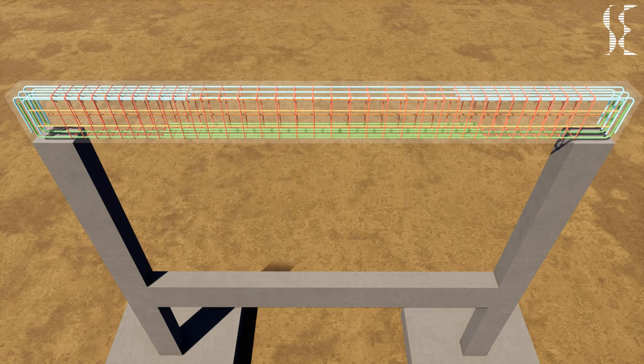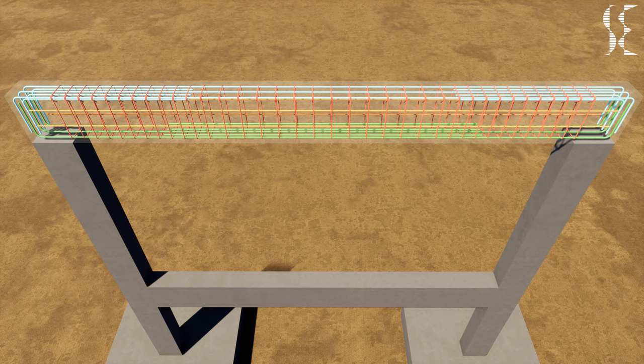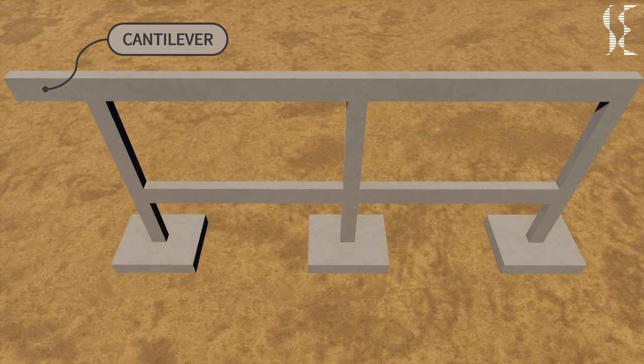This ends our single-span beam reinforcement. Next we will have a look at multi-span or continuous beam arrangement with a cantilever at the end.